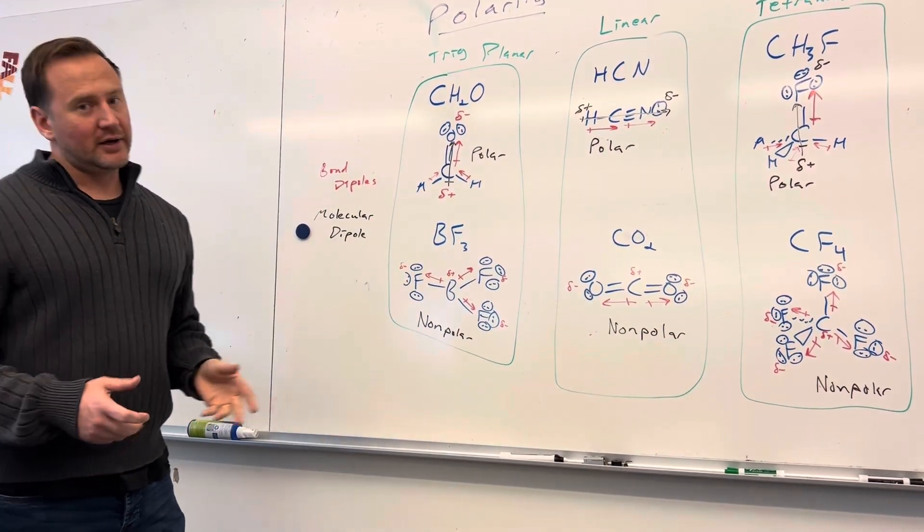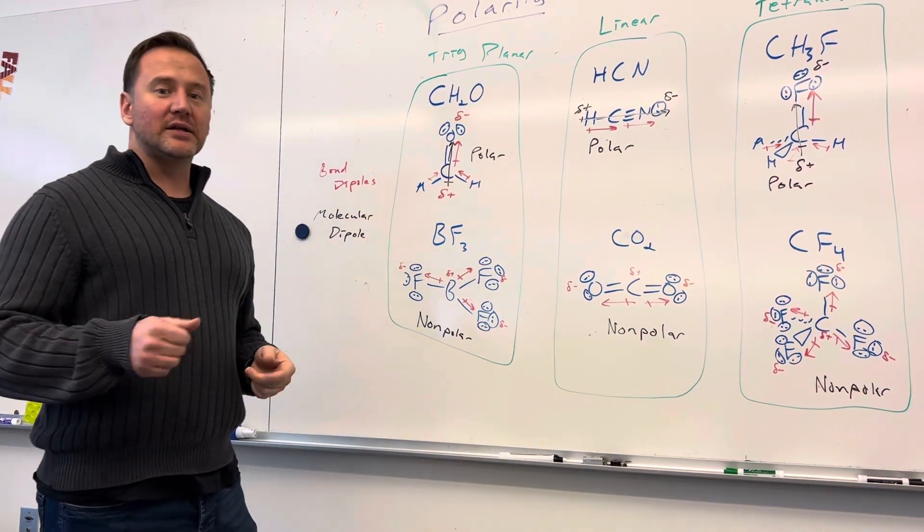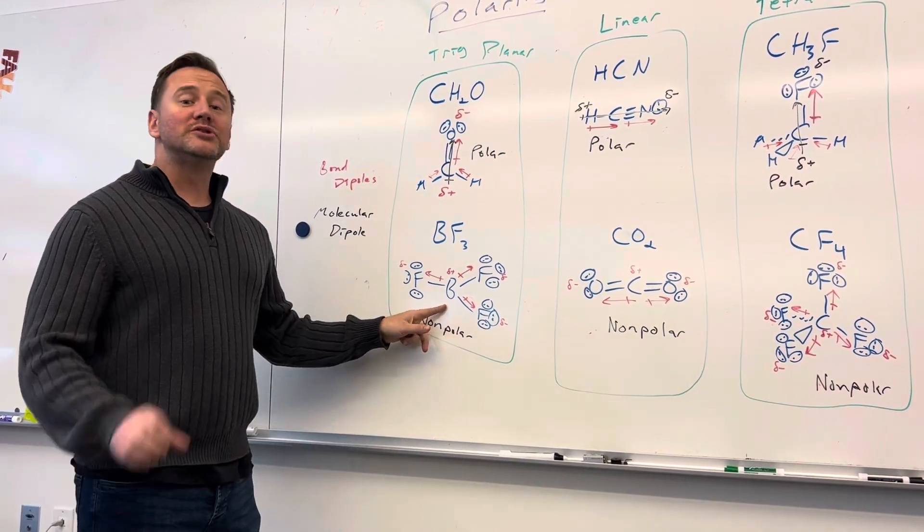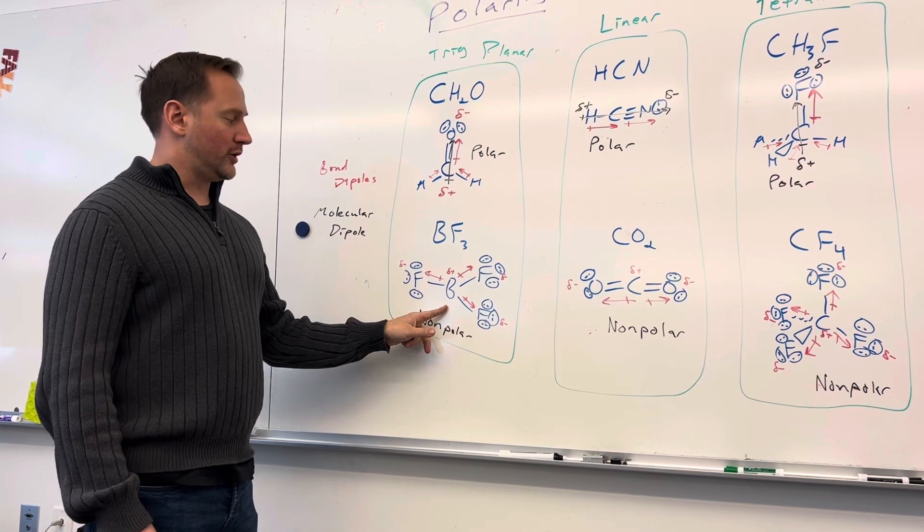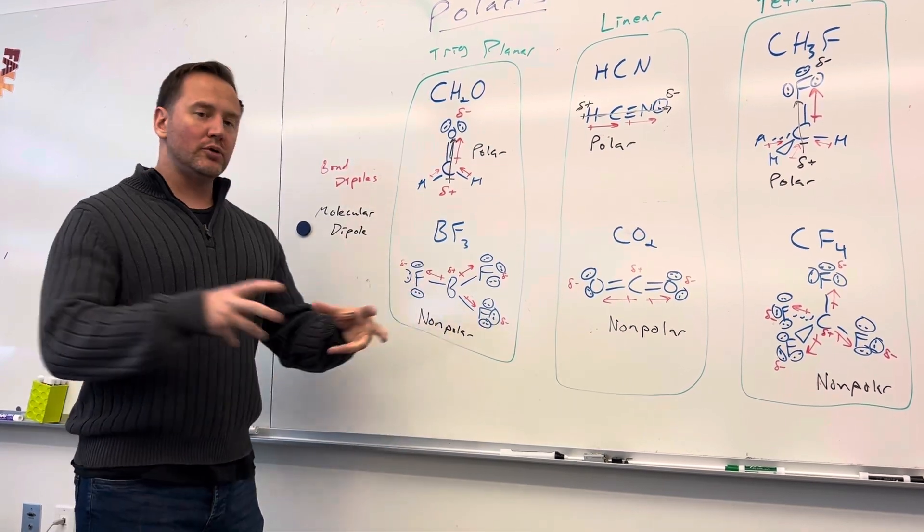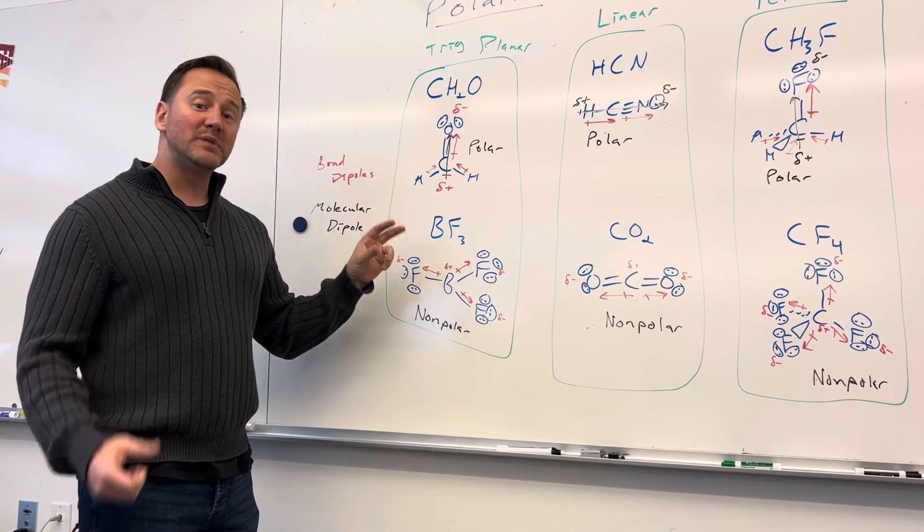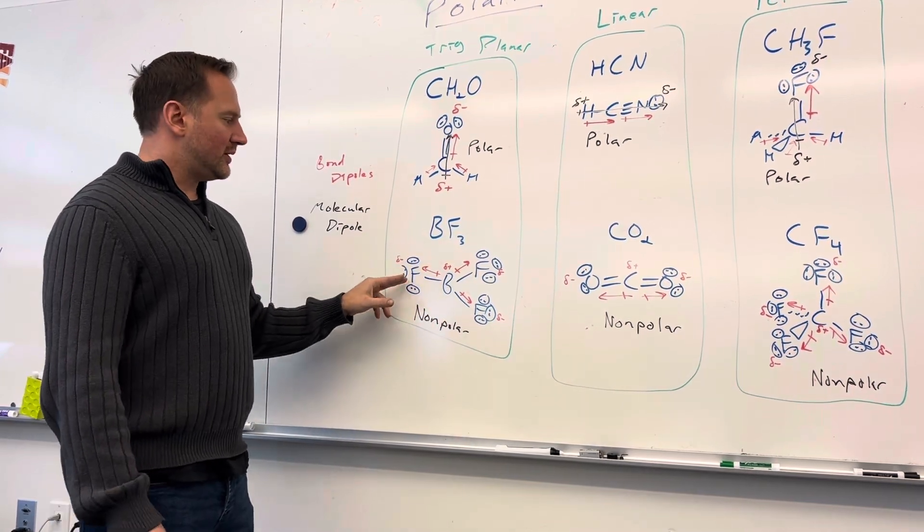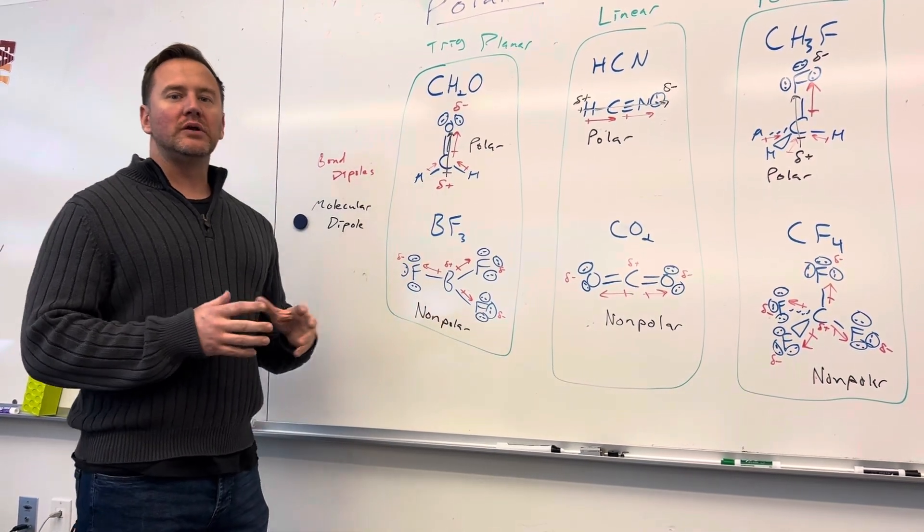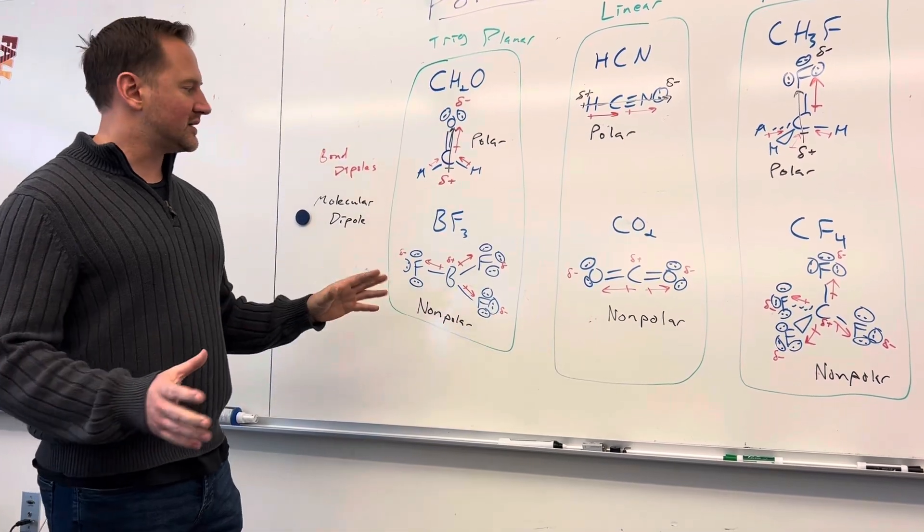Now, if we look at BF3, fluorine has an electronegativity of 4.0, which is much higher than boron's, which is 2.0. So the electrons are being pulled away from the boron, making it pretty electron-deficient. It's going to be partially positive, but everything's pulling equally in opposite directions, so they really kind of cancel each other out.